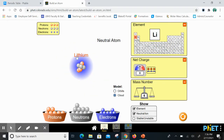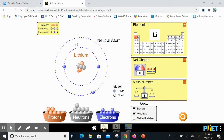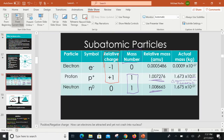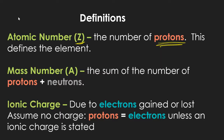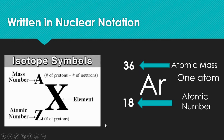Looking at a model of the atom, the electrons are on the outside. You can pull electrons away or add them in, but you don't pull protons out of the nucleus. Ionic charge is due to electrons gained or lost. If protons equal electrons, the atom has no charge. For now, we'll assume there's no charge.